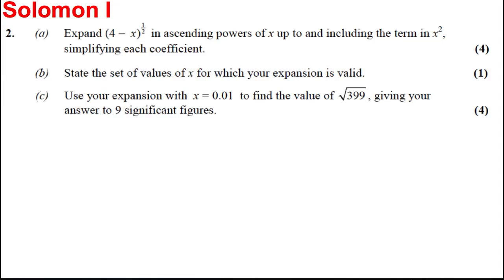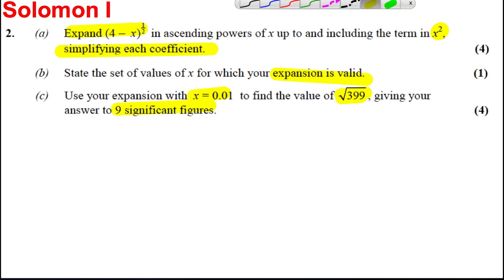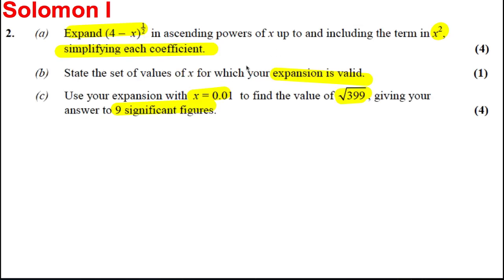Another binomial theorem question, slightly more difficult. We're asked to expand the following in ascending powers of x up to x squared, simplifying each coefficient. Then we're asked the values for which the expansion is valid, and to use the expansion from part a with x equal to 0.1 to find the value of the square root of 399, giving the answer to 3 significant figures.